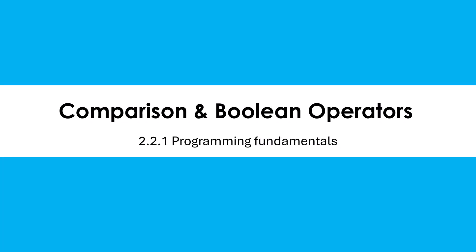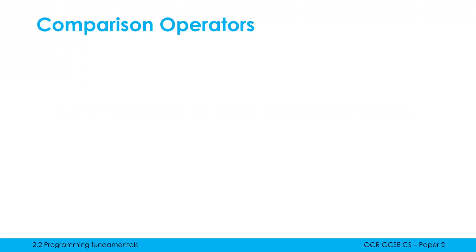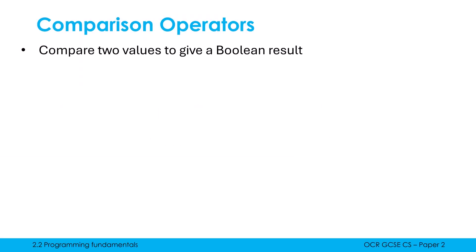Following our look at arithmetic operators, let's now look at two other types: comparison and Boolean operators. The comparison operators will compare two values to give a Boolean result. Remember an operator takes in some inputs, performs some processing — usually very simple processing — and gives us an output. So here the two inputs are just values; it could be any data type, and the output is always Boolean.